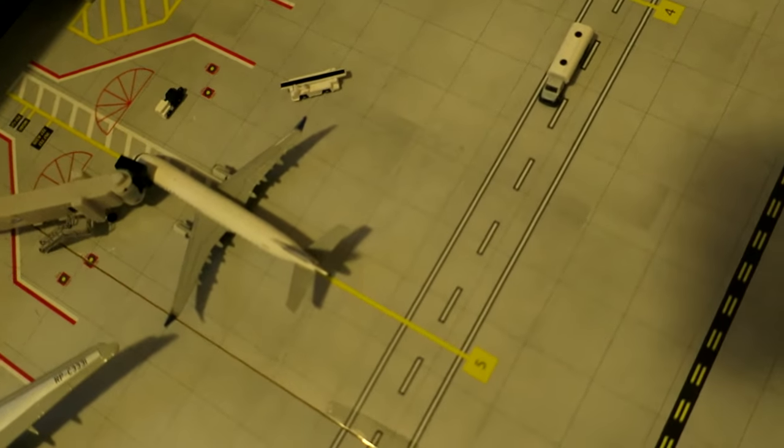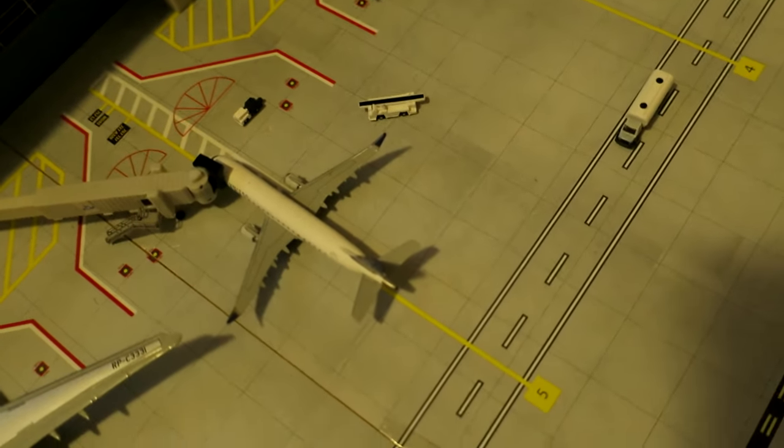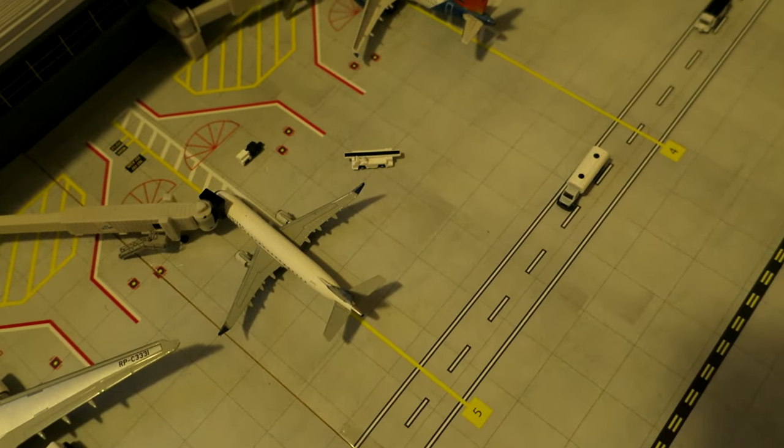Right here, just pulling out of its gate, we've got United Express CRJ-175. It had arrived from Phoenix and will depart to New York.